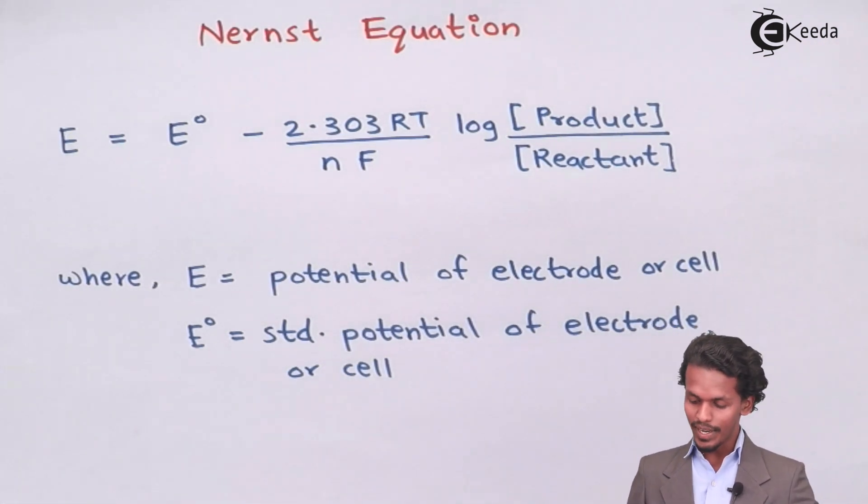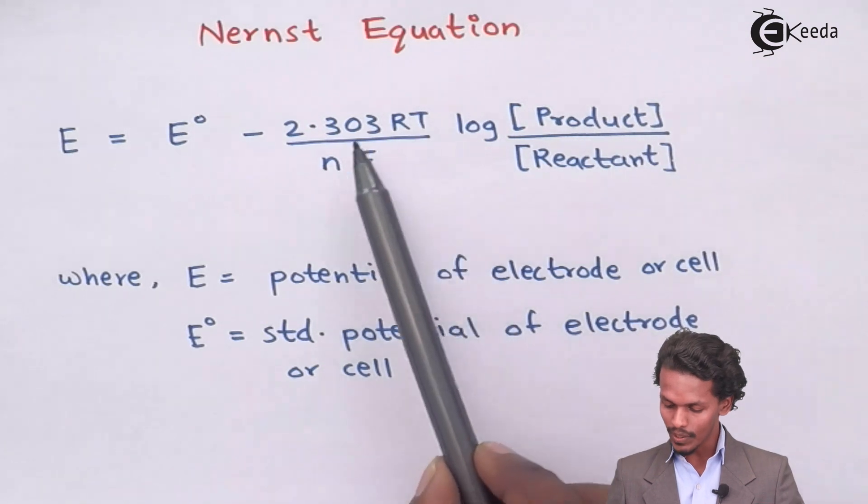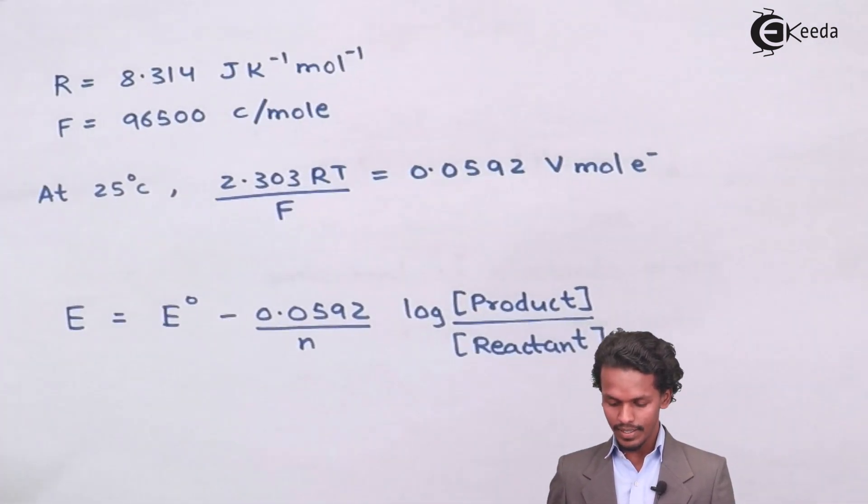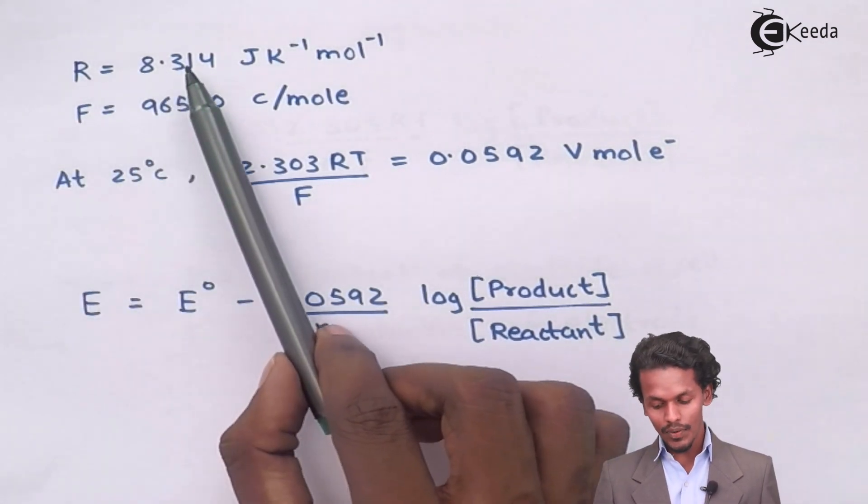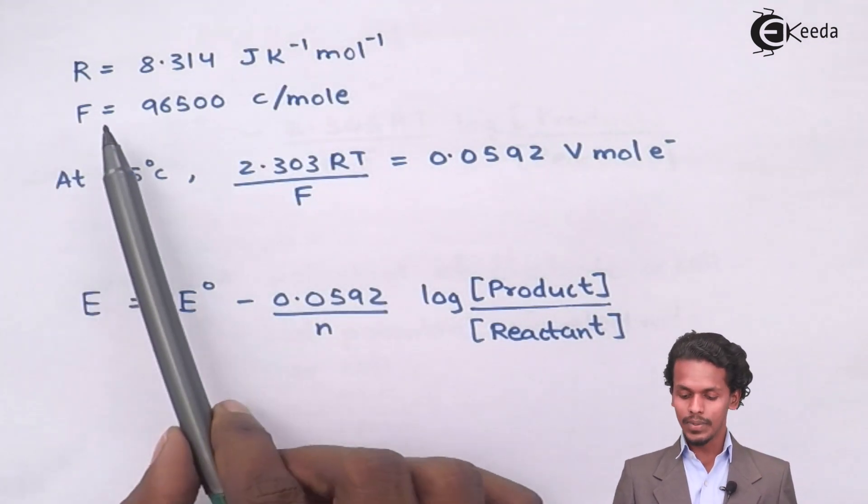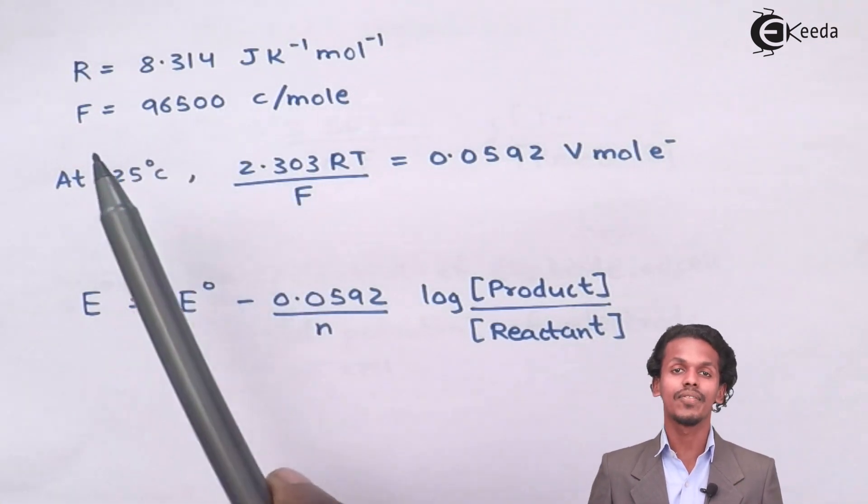Let me give you more detail about what is R and what is T and what is nF. R is known as the gas constant, which has a value of 8.314 Joules per Kelvin per mole, while F is nothing but 96500 Coulomb per mole, that is one Faraday or the Faraday constant.